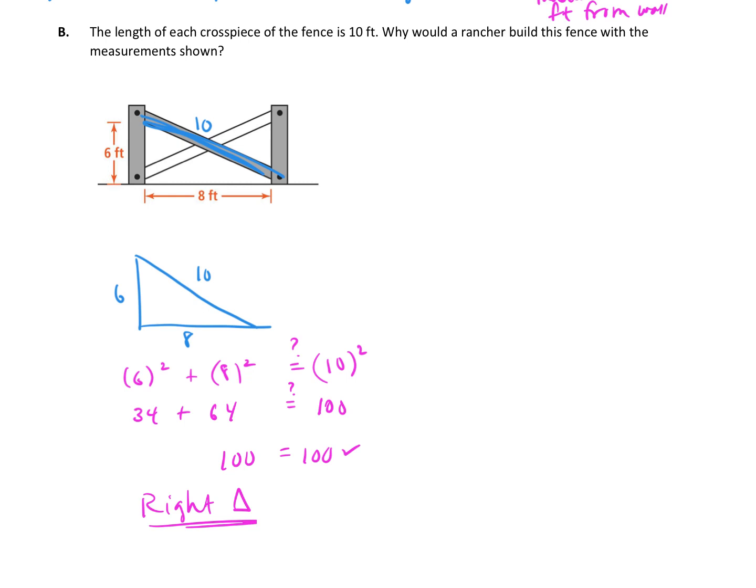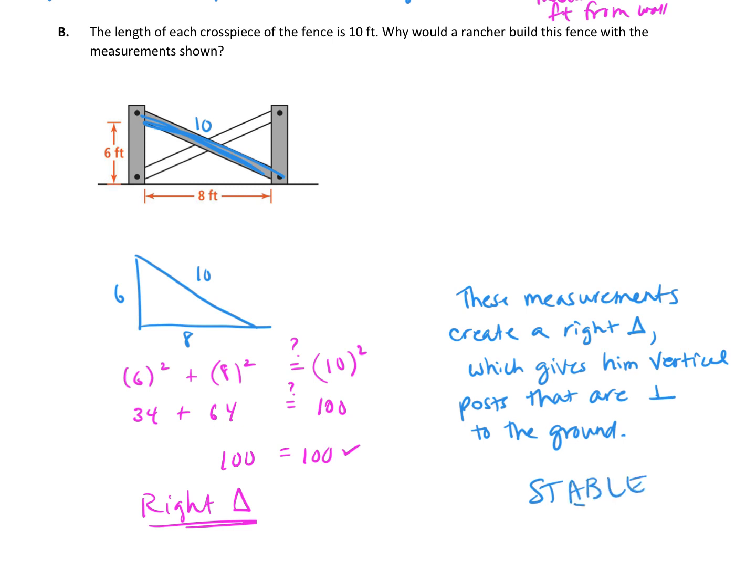So let's put a little summary statement. These measurements create a right triangle, which gives him vertical posts that are perpendicular to the ground. I'm just using a perpendicular symbol, where you remember that. And if those posts are perpendicular to ground, he's going to have a stable fence, and that's his goal.